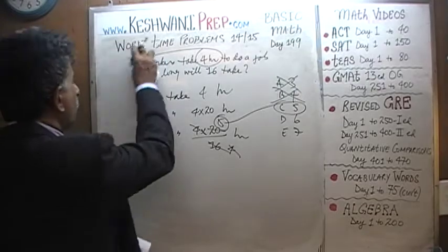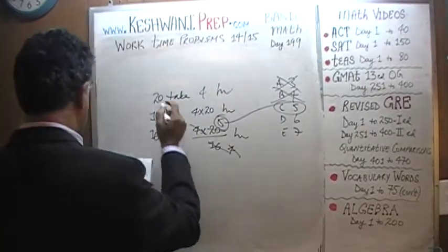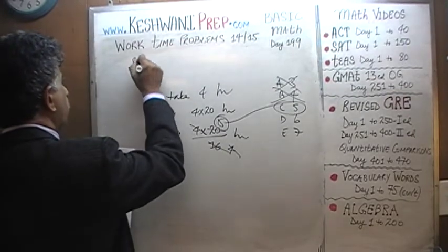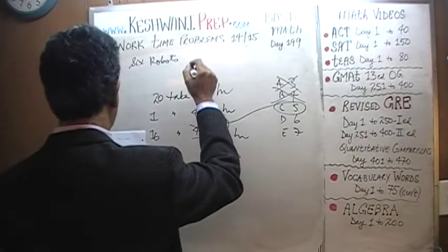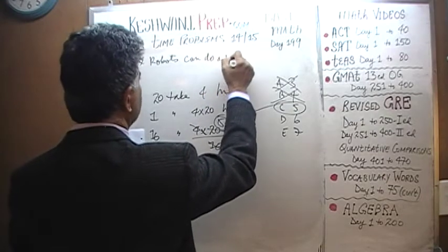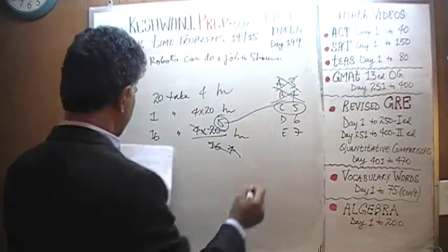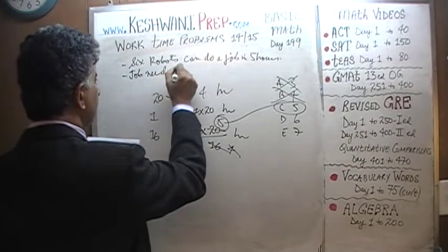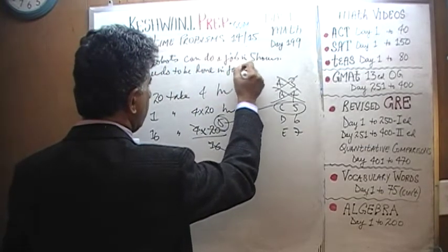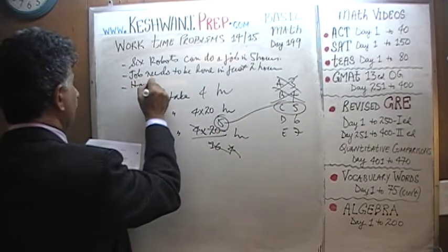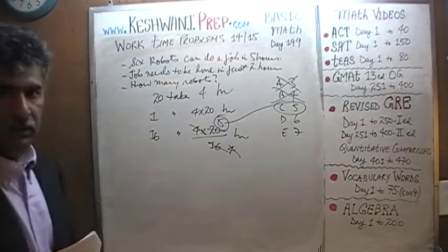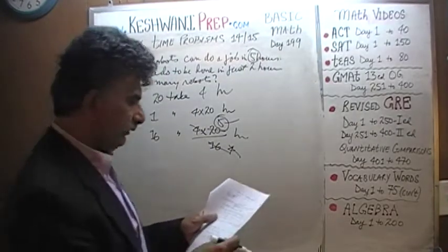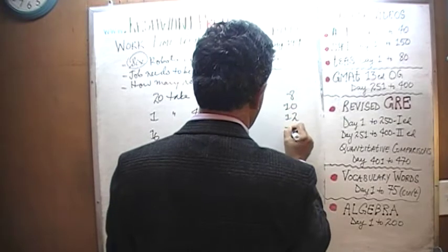Let's do one more. We are told that 6 robots can do a job in 5 hours. The job needs to be done in just 2 hours. The question is: how many robots do we need? The answer choices are 8, 10, 12, 15, and 30.